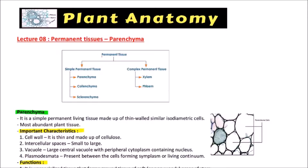First, an outline of permanent tissue. These are of two types: simple and complex. If a single type of cells is present in permanent tissue it is considered simple type, and if more than one type of cells are present it will be considered complex type. Simple permanent tissues are of three types: parenchyma, colenchyma, and sclerenchyma, while the complex permanent tissues are of two types: xylem and phloem.